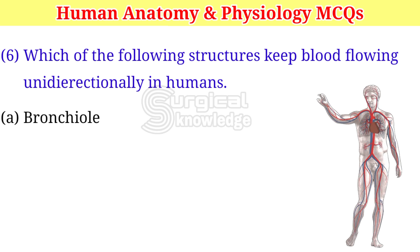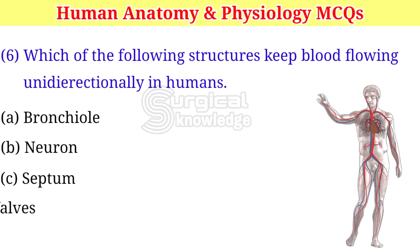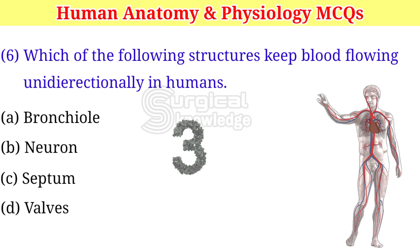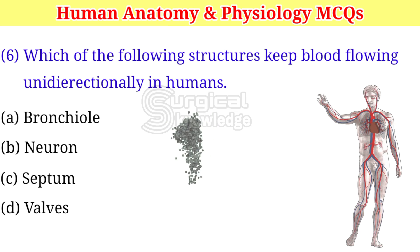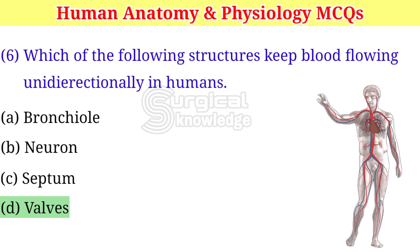Which of the following structures keep blood flowing unidirectionally in humans? A. Bronchiole. B. Neuron. C. Septum. D. Valves. Right answer is valves.